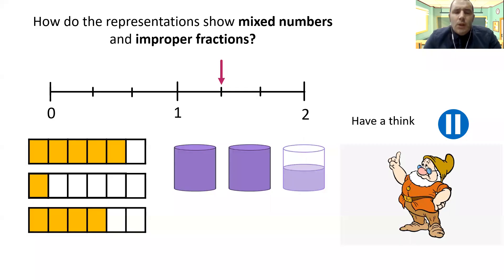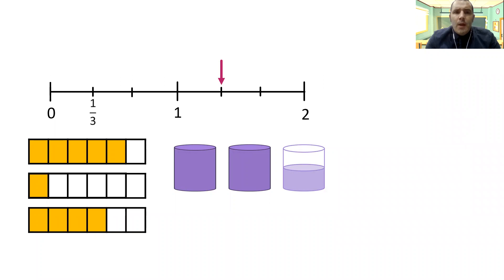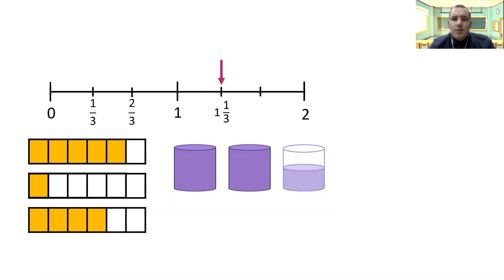How did you get on? So if we look at our number line, we're working in thirds. We've got one third, two thirds, one, and then one and one third — so that would be our mixed number version of how to write it. As an improper fraction, we've got three thirds — that's equivalent to one. I need to add one more third onto that, so it's actually four thirds. I know that three thirds makes one whole, so I can add my extra third onto my three thirds to give me four thirds.